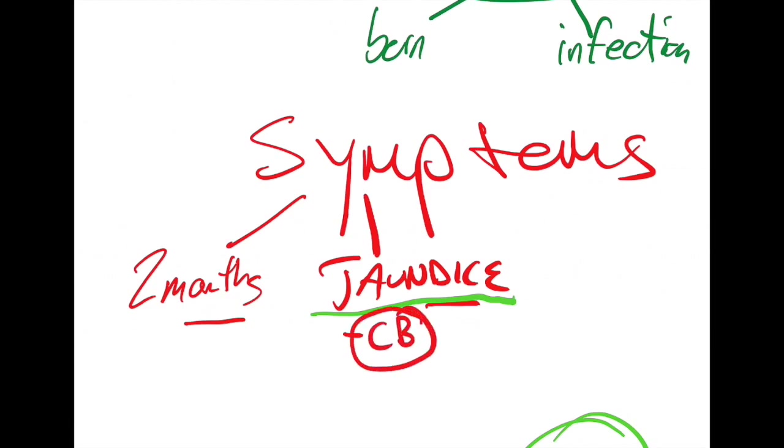Now why am I stressing conjugated versus non-conjugated bilirubin? During exams the way that you're going to differentiate between pathologies is lab values a lot of times. And so it's important to understand the physiology so you can distinguish where the problem is. If you have jaundice and you have really high conjugated bilirubin then you know the liver is not the issue because the liver is conjugating the bilirubin.